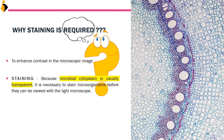There are two terms. One is staining and the second is stain. Staining is the process, and stain is the main ink, dye, or color which is used in staining. Staining is required because microbial cytoplasm is usually transparent.